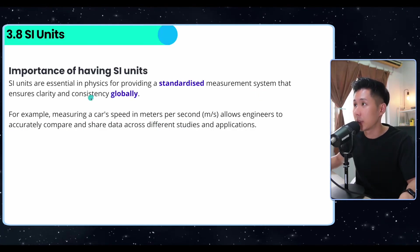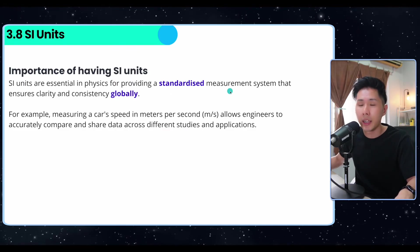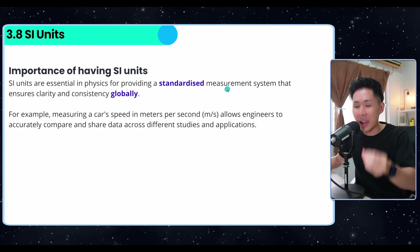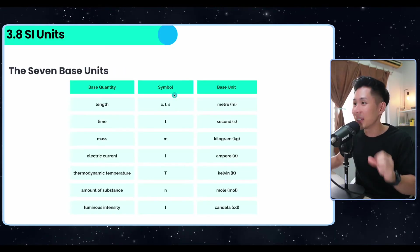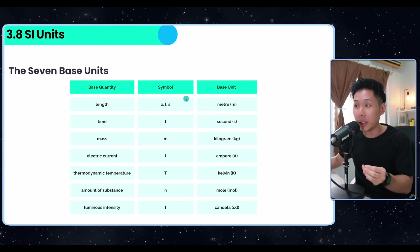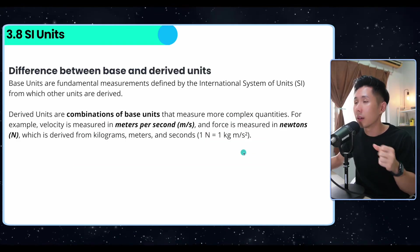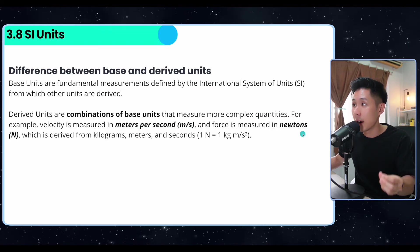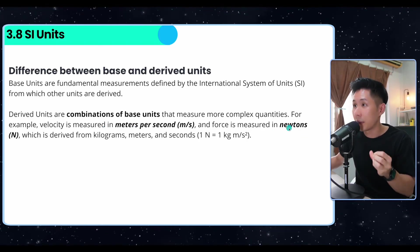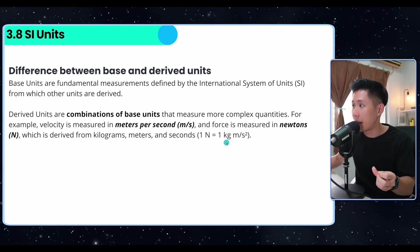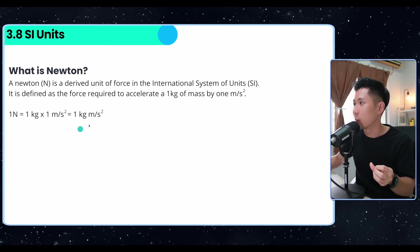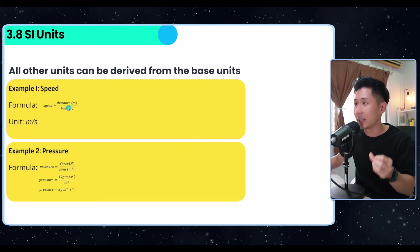SI units are essential in physics to provide a standardized measurement. To cut it short, it means we hope all engineers in the world use the same unit so that when we are communicating, there's no confusion. These are the seven base SI units in A-level physics and their symbols. We're going to look at them when we learn about topics like current and thermodynamics. There's a difference between base units and derived units. Some terms are not base units but can be derived using base units. For example, Newton can be calculated using F equals ma, and the unit for m is kg and acceleration is meter per second squared. So one Newton equals one kilogram meter per second squared.